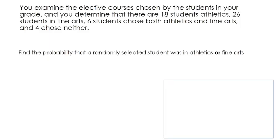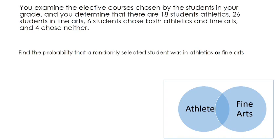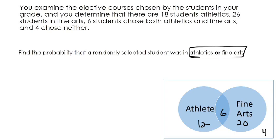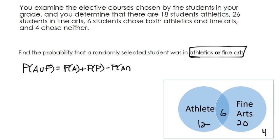Now let's come back to the athletics and fine arts situation, but looking at an OR problem. Bringing in the Venn diagram: we have 12 athletes only, 6 in both, 20 in fine arts only, and 4 that chose neither. We're finding the probability that a randomly selected student was in athletics or fine arts. Using the addition rule: the probability of A or F equals the probability of A plus the probability of F minus the probability of A and F.